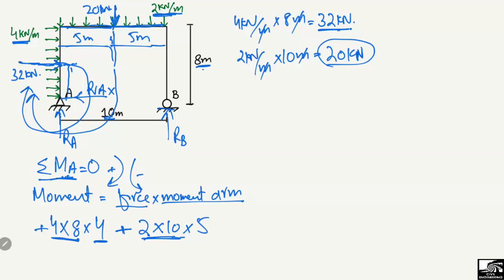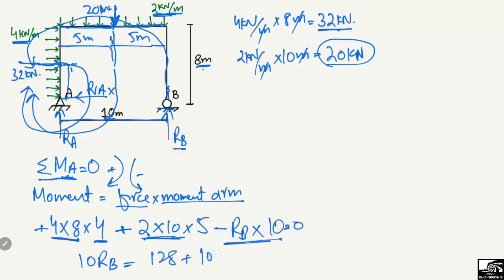RB also creates a moment about point A. Since RB acts upward, it creates an anti-clockwise moment, so it is taken as negative: minus RB multiplied by 10 meters. Solving the equation by shifting terms to the right side: 10 RB = 128 + 100 = 228, so RB = 228 divided by 10 = 22.8 kilonewton.